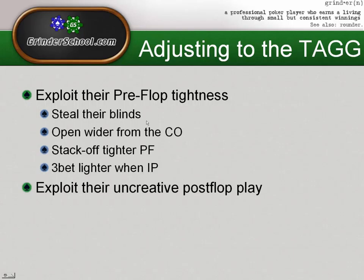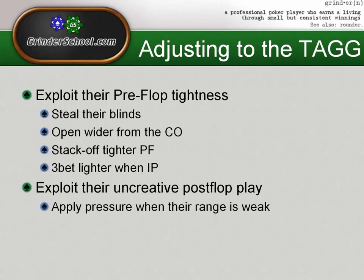We can also adjust to the tag by exploiting their uncreative post-flop play — this is a favorite. While pre-flop is just one street of poker, post-flop gives us three streets. I like to apply pressure when their range is weak. They're playing very fit-or-fold poker post-flop — either they hit a hand and will continue, or they've bricked and will give up pretty easily. When we feel their range is pretty weak, we should be applying a lot of pressure: betting flop and turn, two-barreling, maybe three-barreling, or bluff-raising flops when the range of hands they'll continue with is very small.